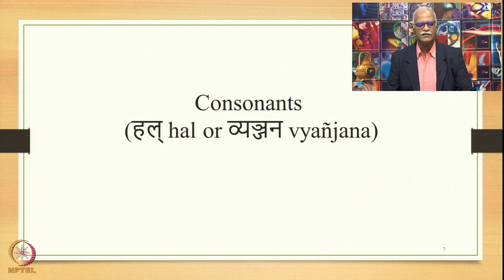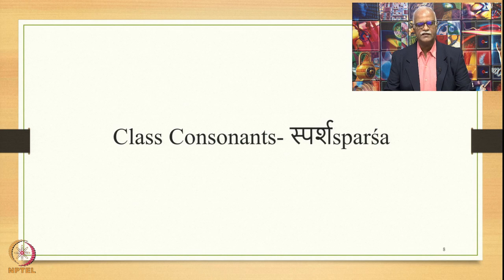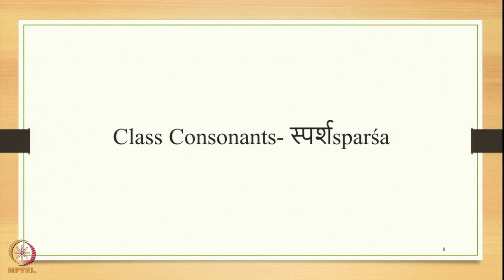We have already started studying the features of consonants, which are produced with half a matra time. Amongst them, we have already studied antastha (semi-vowels), we have already studied sibilants (ushma), and we have already studied ayogavaha. Now what remains is the class consonants, also known as sparsha. Let us study each of these classes in detail now.